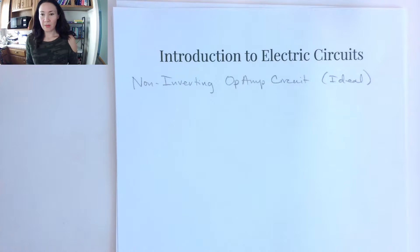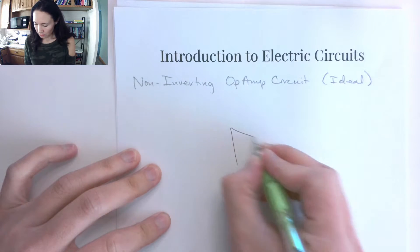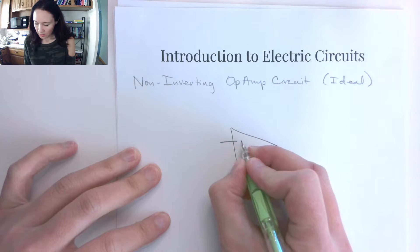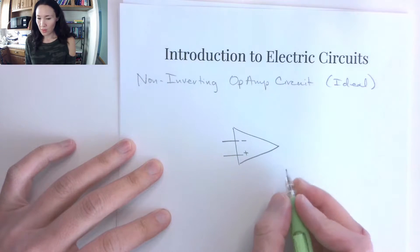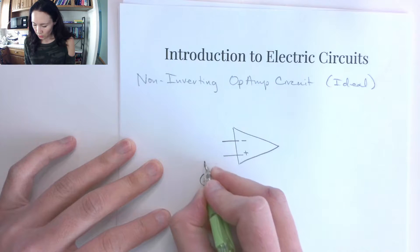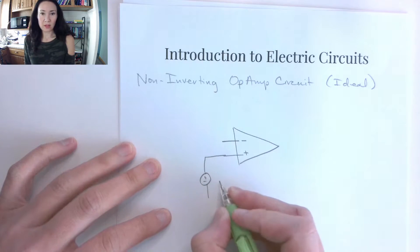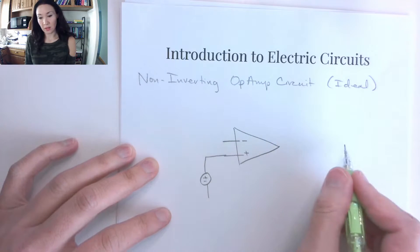The first op-amp circuit we're going to take a close look at is the non-inverting amplifier. Remember we have the inverting input and the non-inverting input. If we apply an input voltage to the non-inverting input, then whatever the sign of this voltage coming in here will be the same sign as what comes out.